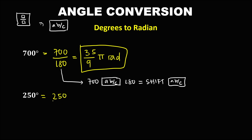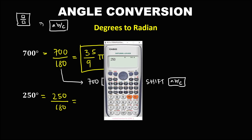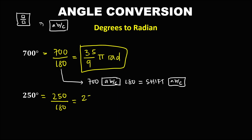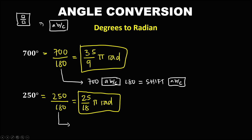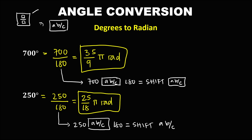For 250 degrees, divide by 180. Using the fraction form in the calculator: input 250, then the fraction form, then 180, then equals — that gives 25 over 18. So this is equal to 25/18 π rad. If using the ABC function: input 250, then ABC, then 180, then equals, then Shift A, B, C to get 25 over 18.